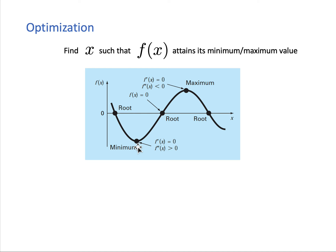We can recall some rules from basic calculus. When we have a function of one independent variable x, there are tests to decide whether a particular point is a minimum or maximum. The first requirement for both is that the first derivative of f of x must be zero at that point. If it's not zero, there is a direction where we can go that increases the function value, so that point cannot be a local or global maximum.